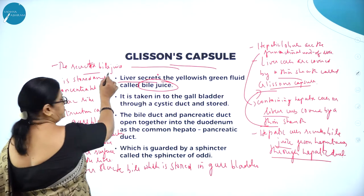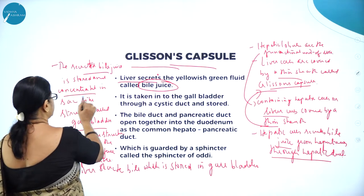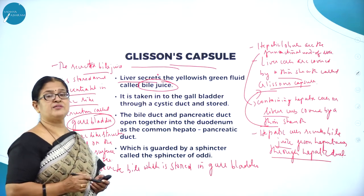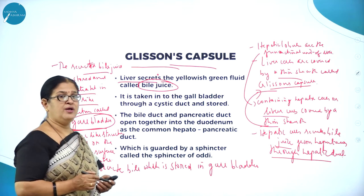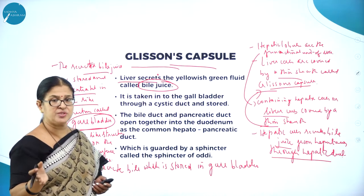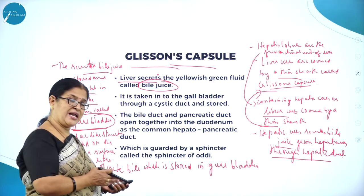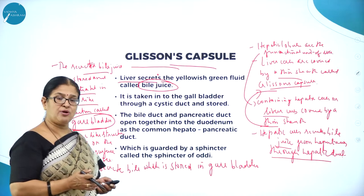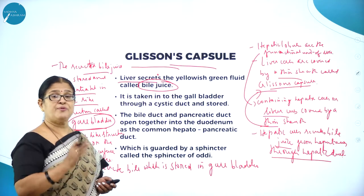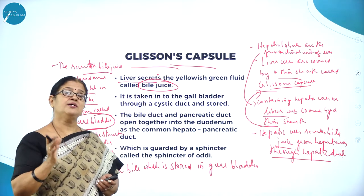The bile juice secreted by the liver is stored and concentrated in a sac-like structure called the gallbladder. The gallbladder plays a very important role and there is a duct called the bile duct. The liver produces bile juice and the pancreas produces pancreatic juice. All these secretions pour into the gallbladder, and from there through the bile duct, they pour into the first part of the small intestine called the duodenum.